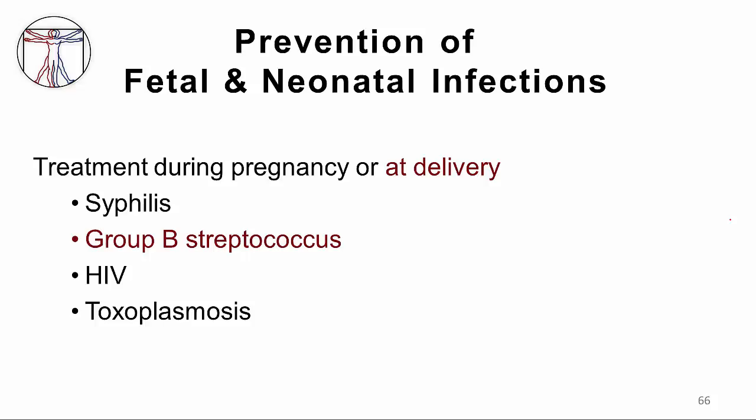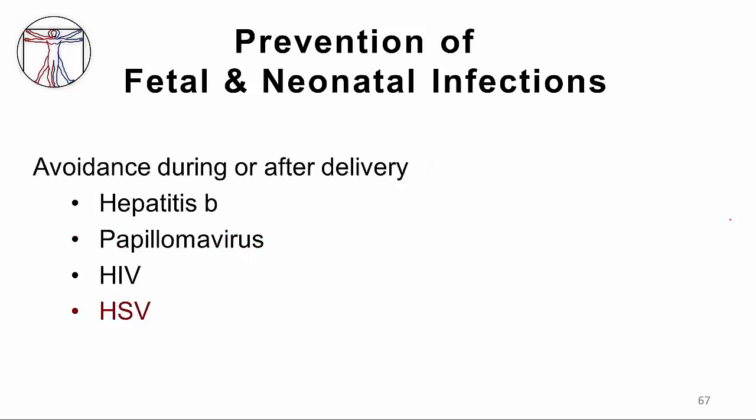For places where toxoplasmosis is especially a problem — such as in France, from eating undercooked meat during pregnancy — screening and treatment may be effective. The final methodology for preventing fetal and neonatal infections is avoidance during or after delivery if possible. Herpes is highlighted here, as it is mostly an infection acquired from an infected mother at delivery. If contact with the virus can be avoided — for example, through cesarean section — that may be an effective strategy, although it has limitations which will be discussed at another time.